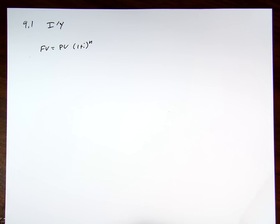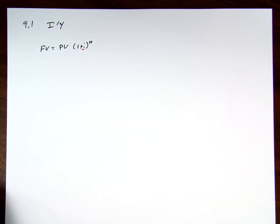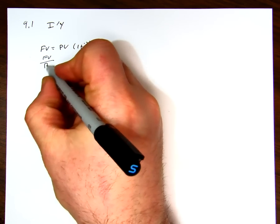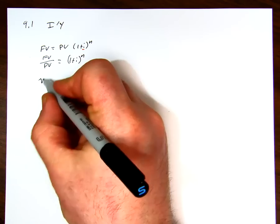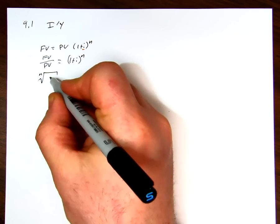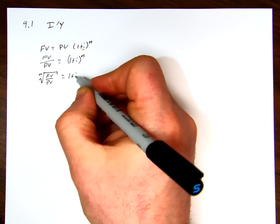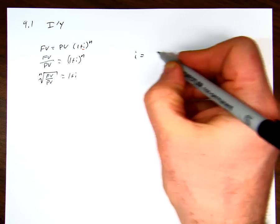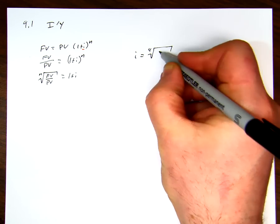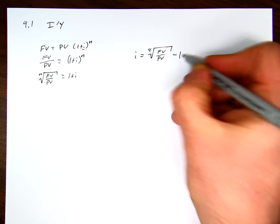So the first thing we do is the future value over the present value is equal to 1 plus i to the n. And in order to get rid of that, we take the nth root of the future value over the present value is 1 plus i. So our formula is i is equal to the nth root of the future value over the present value minus 1.